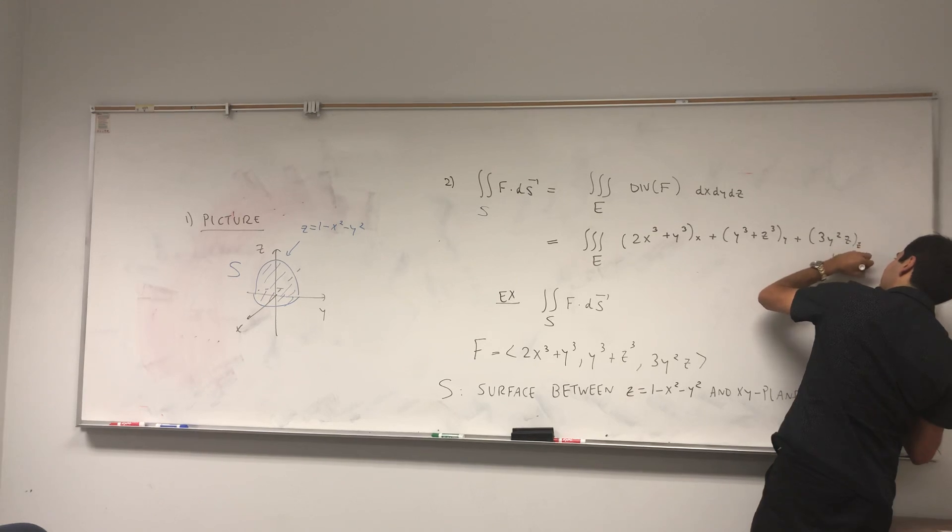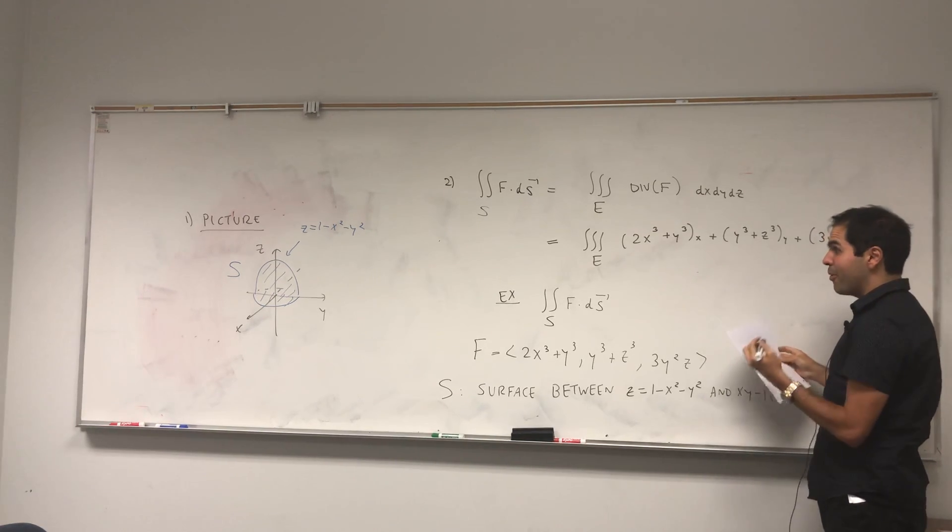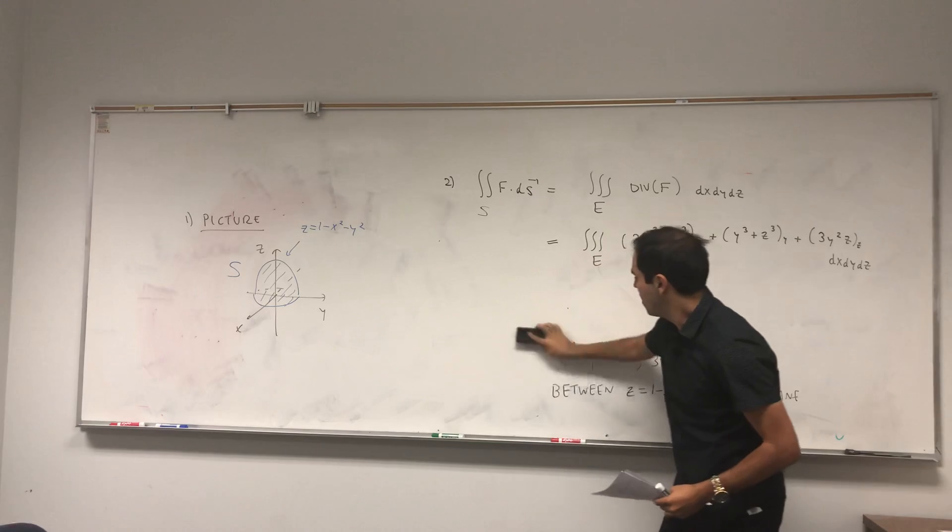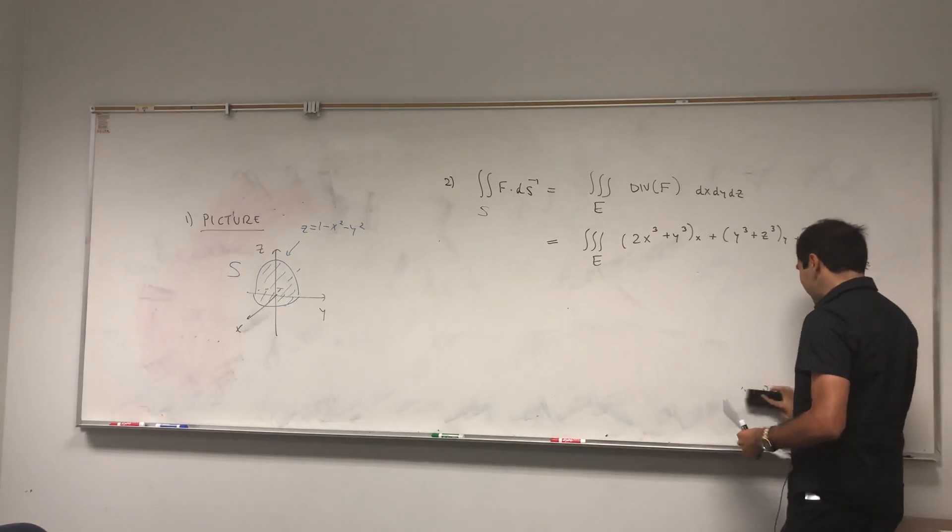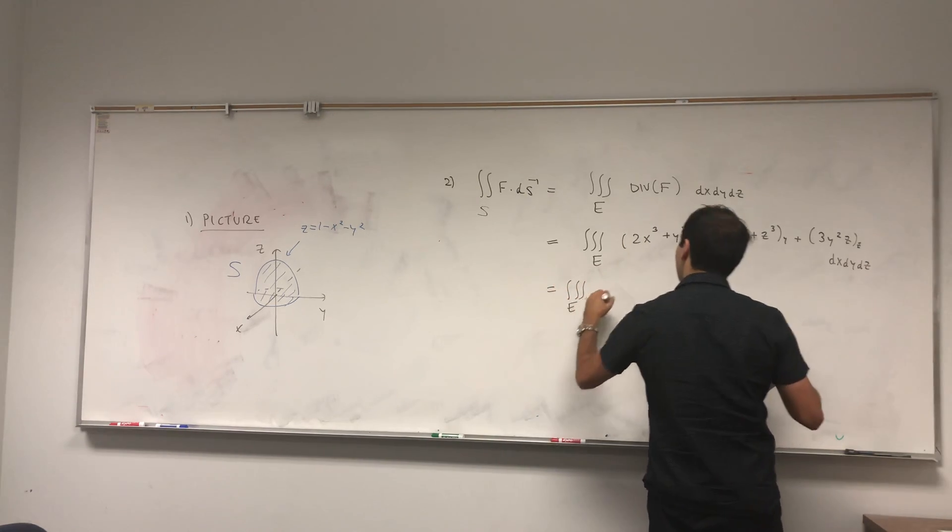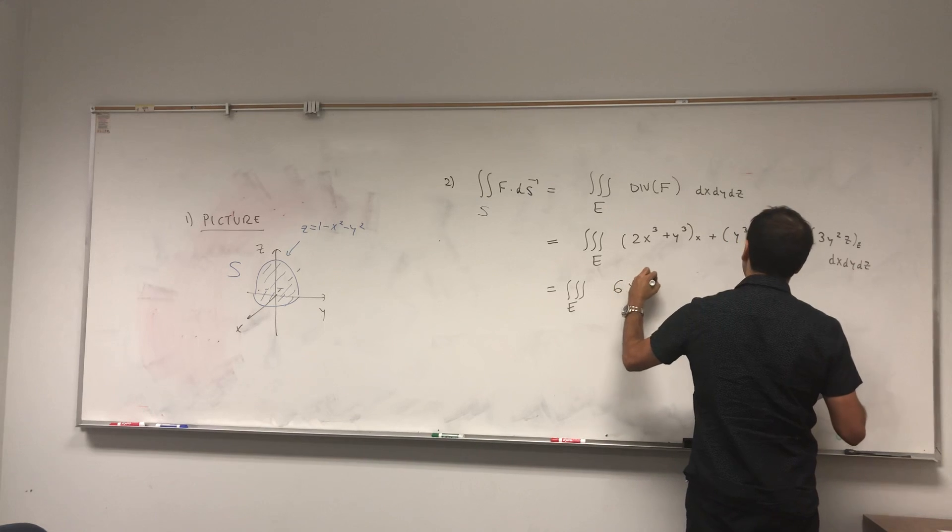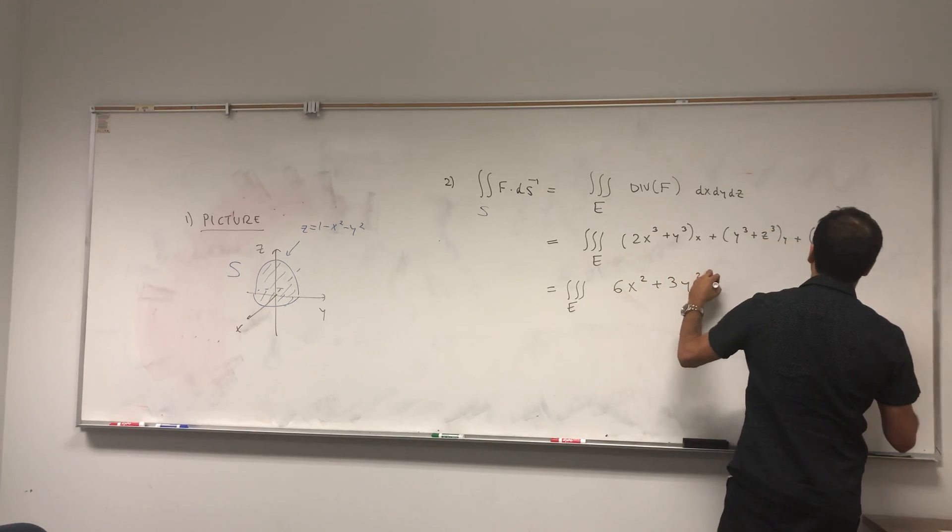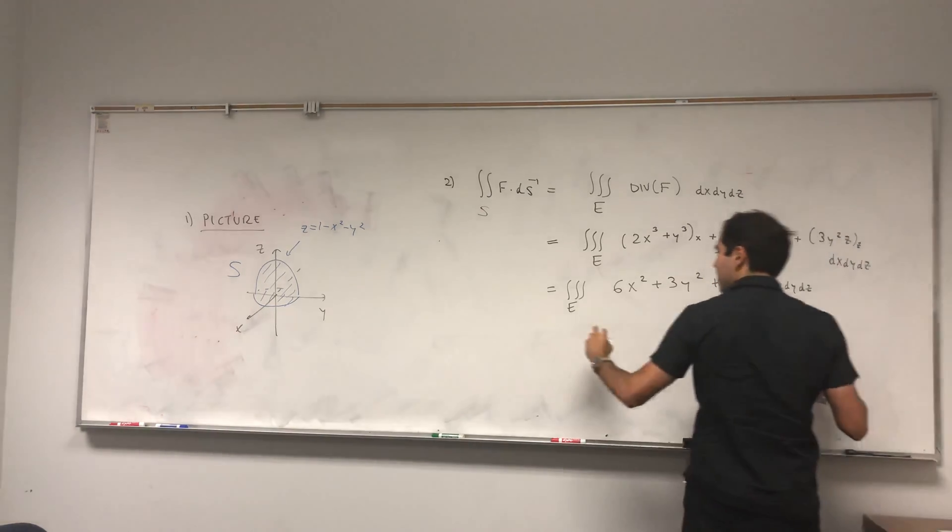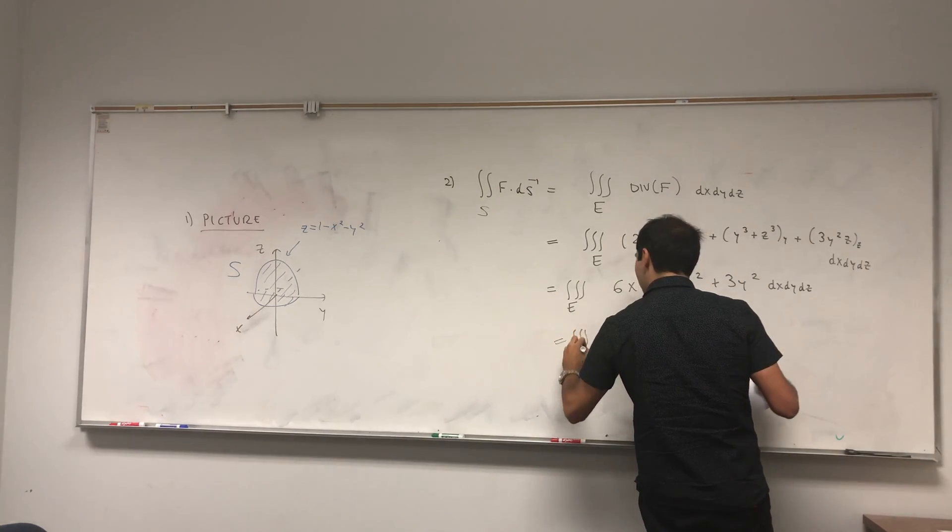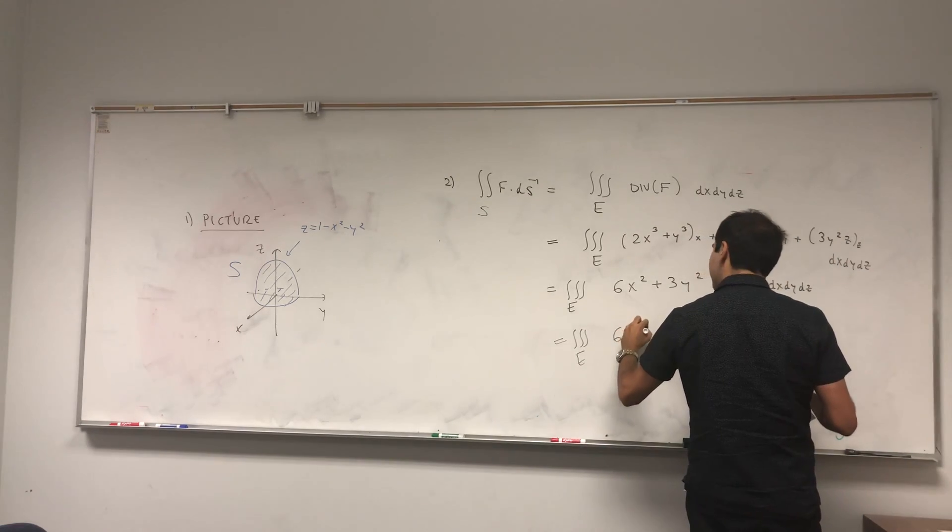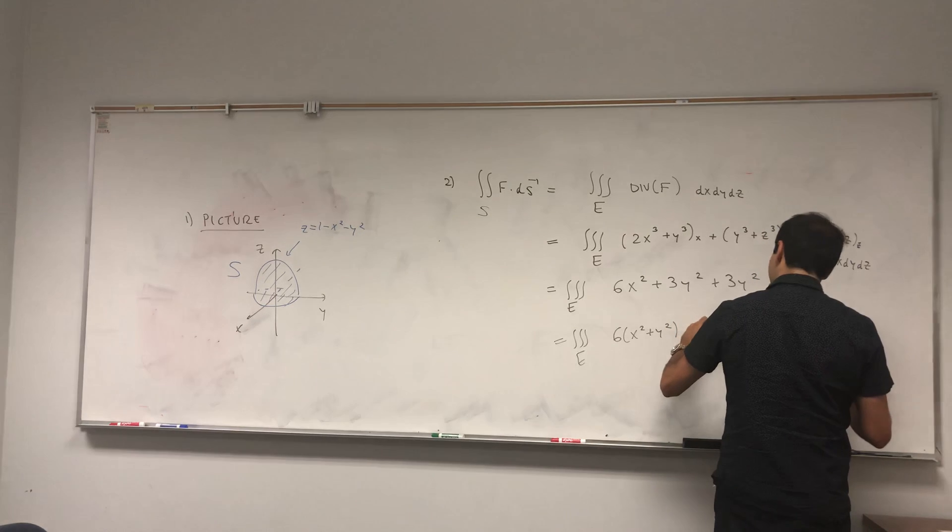What's important is the divergence is just a number, not a vector field anymore. Let's see - the triple integral over E becomes 6x² + 3y² + 3y² dx dy dz, which becomes 6(x² + y²) dx dy dz.